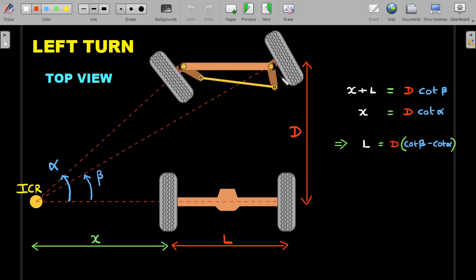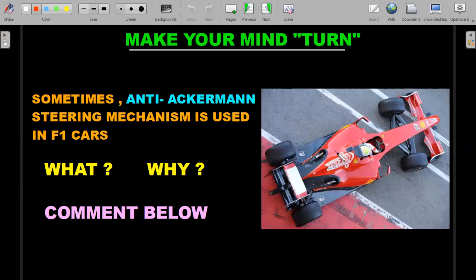Food for thought: there is something called anti-Ackermann steering also, which is used at times in F1 cars. What is that anti-Ackermann steering and why is it used in F1 cars? What's the advantage of it or disadvantages if you use it in normal cars? Try to find out and comment below in the comment section. It will be a nice impetus for your preparation towards IOQ.